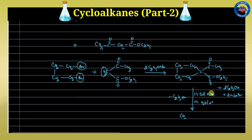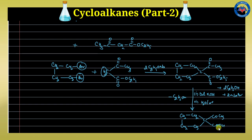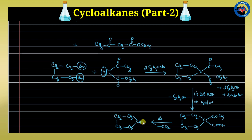Once we get the aceto ester of cyclopentane, we treat it with dilute KOH. Here we use dilute KOH because we have only one ester group and one keto group. The ester is hydrolyzed — potassium replaces the ethoxy group and ethanol is released — converting the ester into a carboxylate salt, then further hydrolysis gives the free carboxylic acid with the keto group intact.